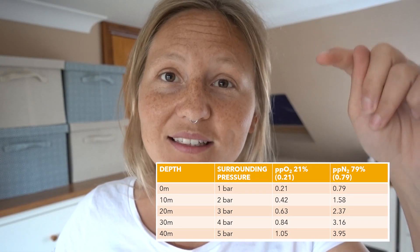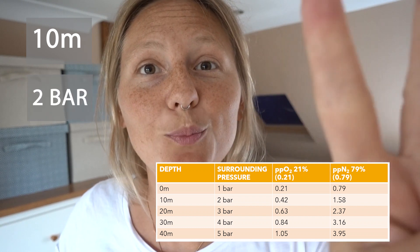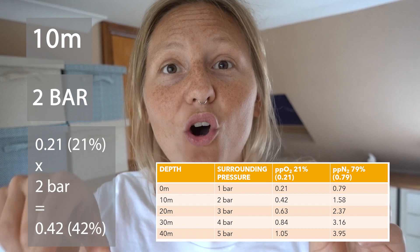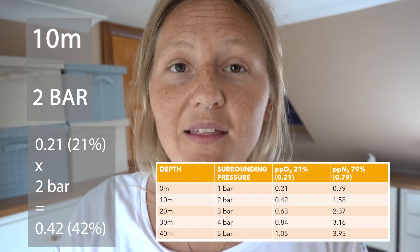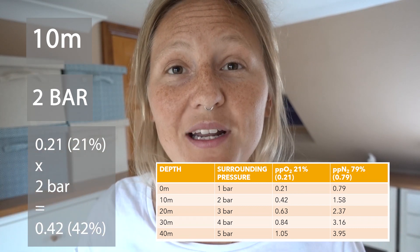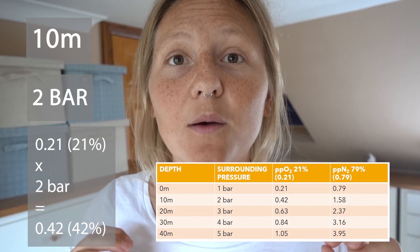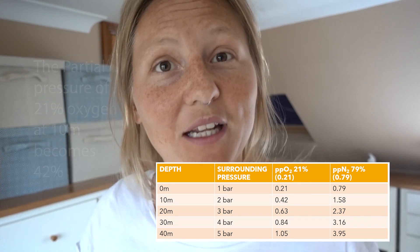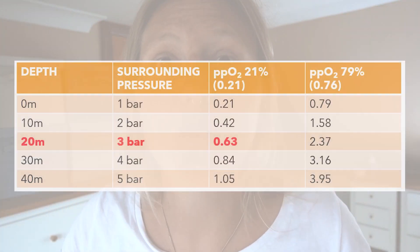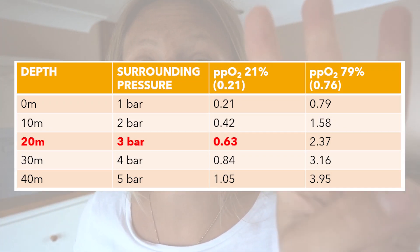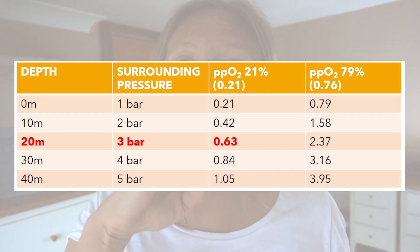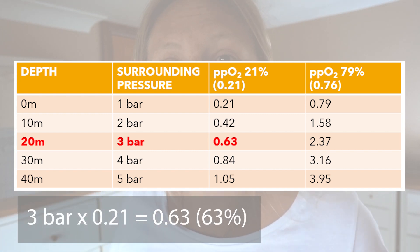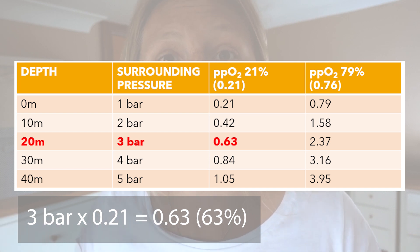So we descend down to 10 meters, we're experiencing 2 bar. This has a corresponding effect on the partial pressure of oxygen, so the partial pressure of oxygen at 10 meters becomes 0.42 — so 42% oxygen in effect. The same goes when we go to 20 meters: we're now experiencing 3 bar, and we're experiencing a partial pressure of oxygen of 0.63 — so 63% equivalent.